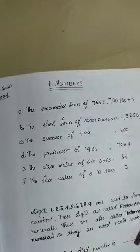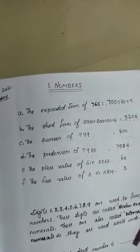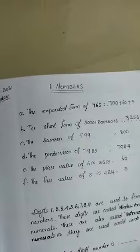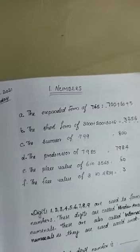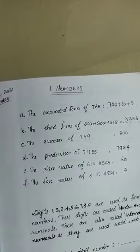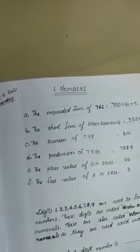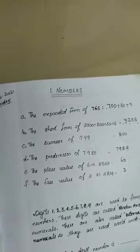Then the predecessor of 7,985. The place value of 6 in 3565. The face value of 3 in 4834.